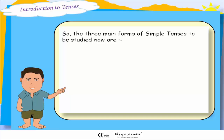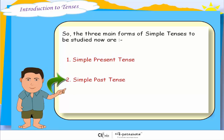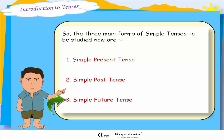So, the three main forms of simple tenses to be studied now are the simple present tense, the simple past tense, and the simple future tense.